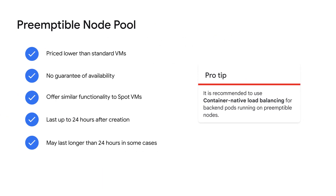Finally, let's describe preemptible virtual machines and the kind of load balancing to be used. Preemptible VMs are priced lower than standard VMs and provide no guarantee of availability. They offer similar functionality to spot VMs, but only last up to 24 hours after creation. Since there is no availability guarantee, it's recommended that you use container-native load balancing for backend pods running on preemptible nodes. In addition, you can configure a load balancer health check to promptly remove bad endpoints.